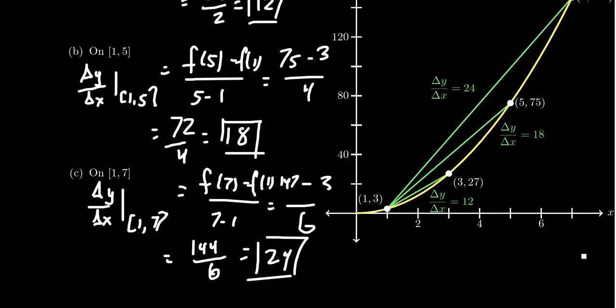So notice as you go from 1 to 7, the slope of that secant line is going to be 24. So on average, every time you increase one horizontal unit, you'll increase 24 vertical units.